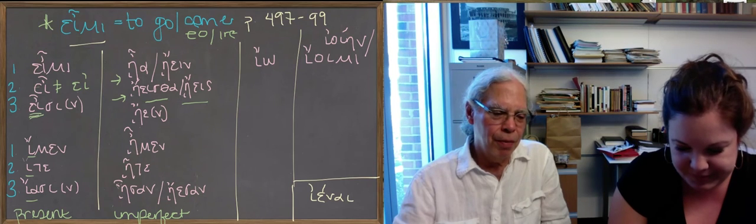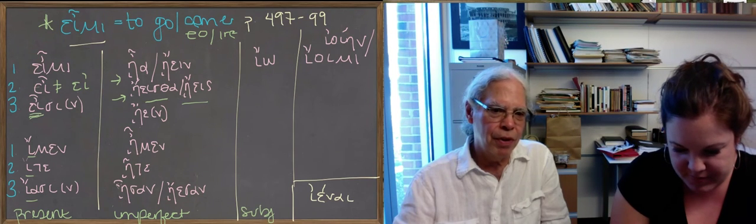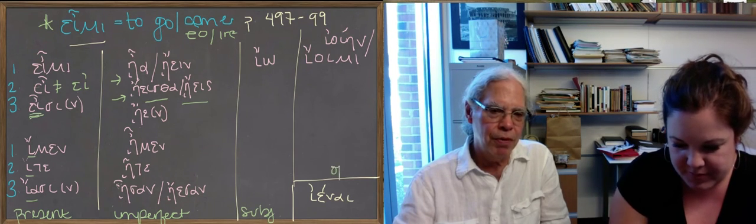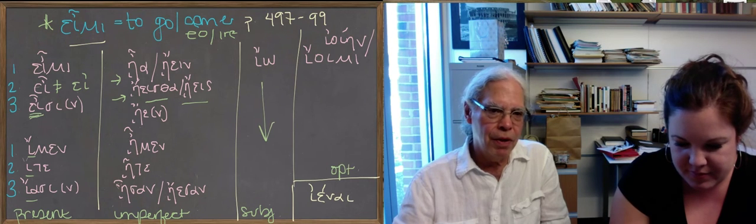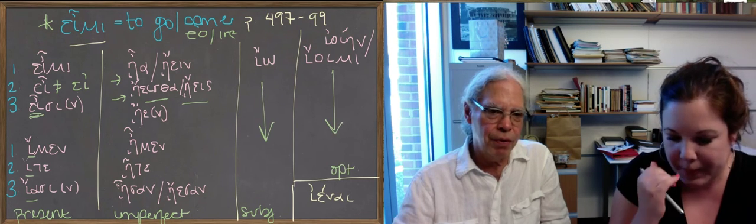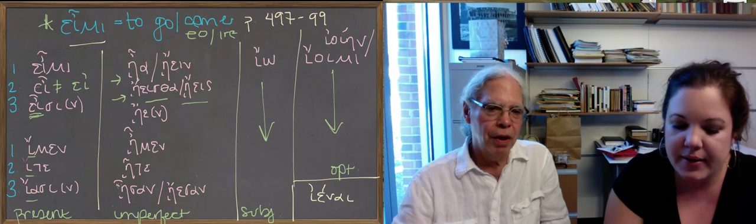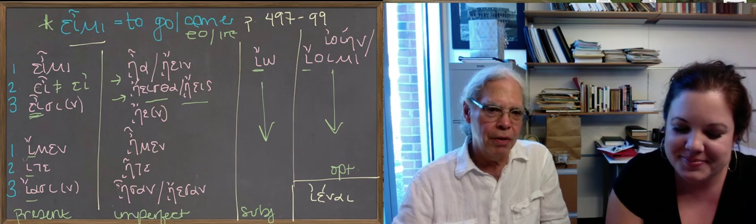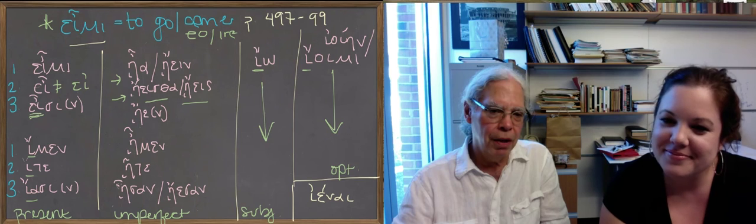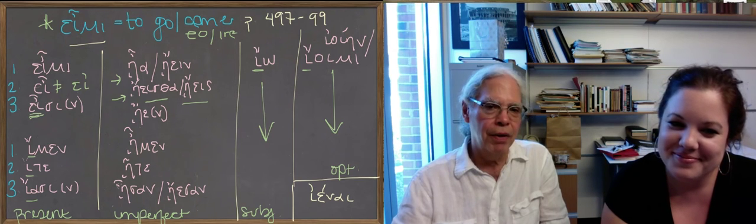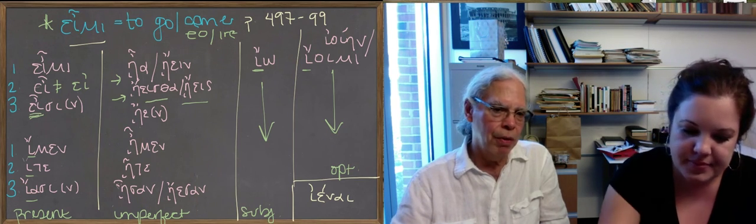In the next column, Boisey's written the first person singular of the subjunctive and the first person singular of the optative and the infinitive, and you can see that the stem in all of these forms is just iota. So it goes ἴω, ἴῃς, ἴῃ, ἴωμεν, ἴητε, ἴωσι rather. And the optative is going to be ἰοίμην, ἰοῖς, ἰοῖ, ἰοῖμεν, ἰοῖτε, ἰοῖεν.